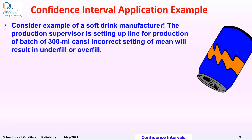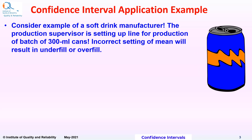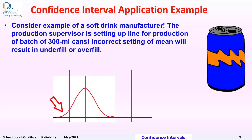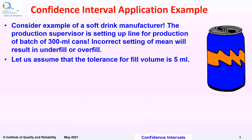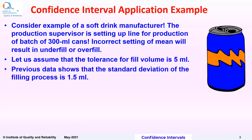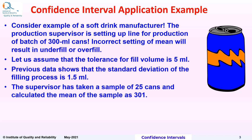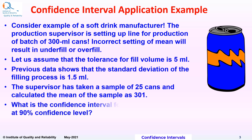Consider the example of a soft drink manufacturer. The production supervisor is setting up a line for production of a batch of 300ml cans. Incorrect setting of mean will result in underfill or overfill of the cans. The tolerance for fill volume is 5ml. Previous data shows that the standard deviation of the filling process is 1.5ml. The supervisor has taken a sample of 25 cans and calculated the mean of the sample as 301ml. What is the confidence interval for population mean at 90% confidence level?